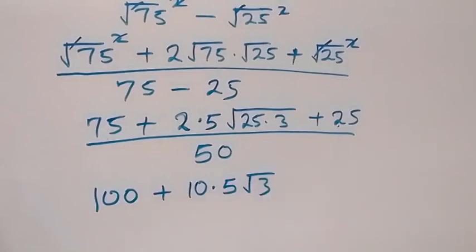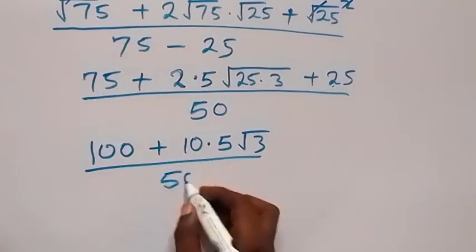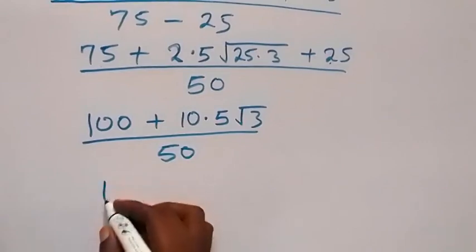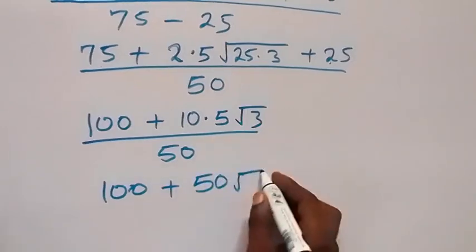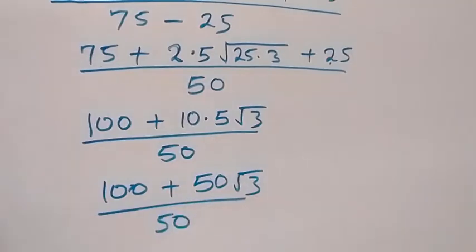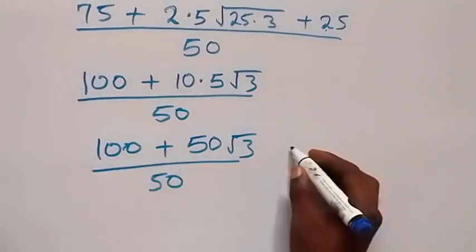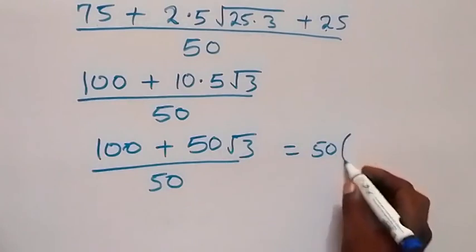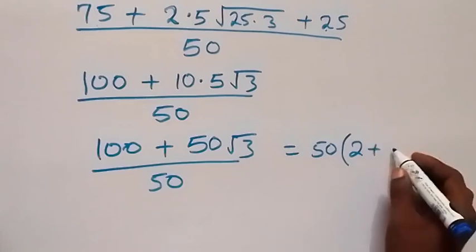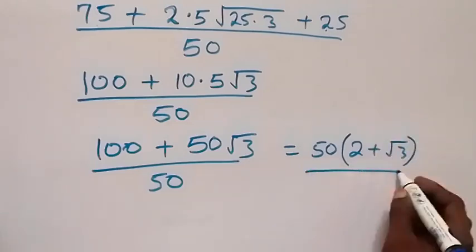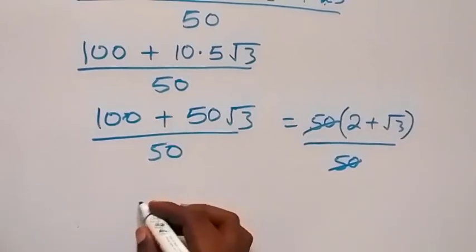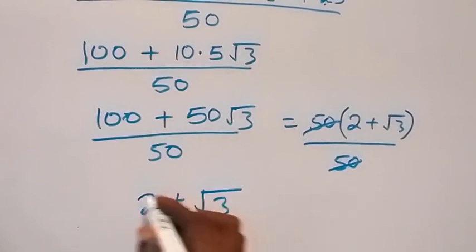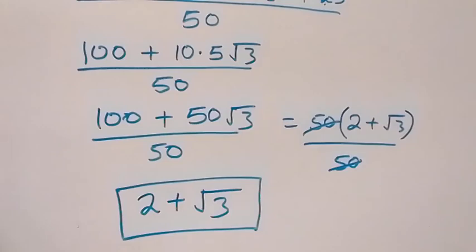We have 50 plus 10 root 3, then root 3, over 50. We factor 50 out, leaving 2 root 3 plus root 3 in the bracket, over 50. The 50s cancel, and what we have left is 2 plus root 3. This is the same answer we got in the first method, confirming the result.